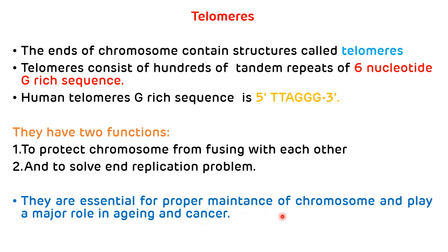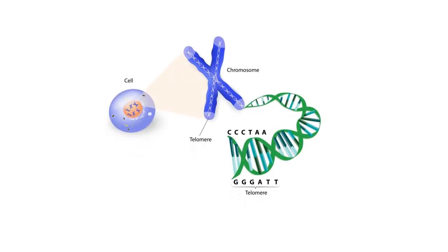Telomeres are essential for the proper maintenance of the chromosome and play a major role in aging as well as in cancer. They are present at the end of the chromosome, contain hundreds of tandem repeats of a 6-nucleotide G-rich sequence — in human telomeres this sequence is 5'-TTAGGG-3'. This picture shows the telomeres present at the end of the chromosome, containing hundreds of tandem repeats of the 6-nucleotide sequence.